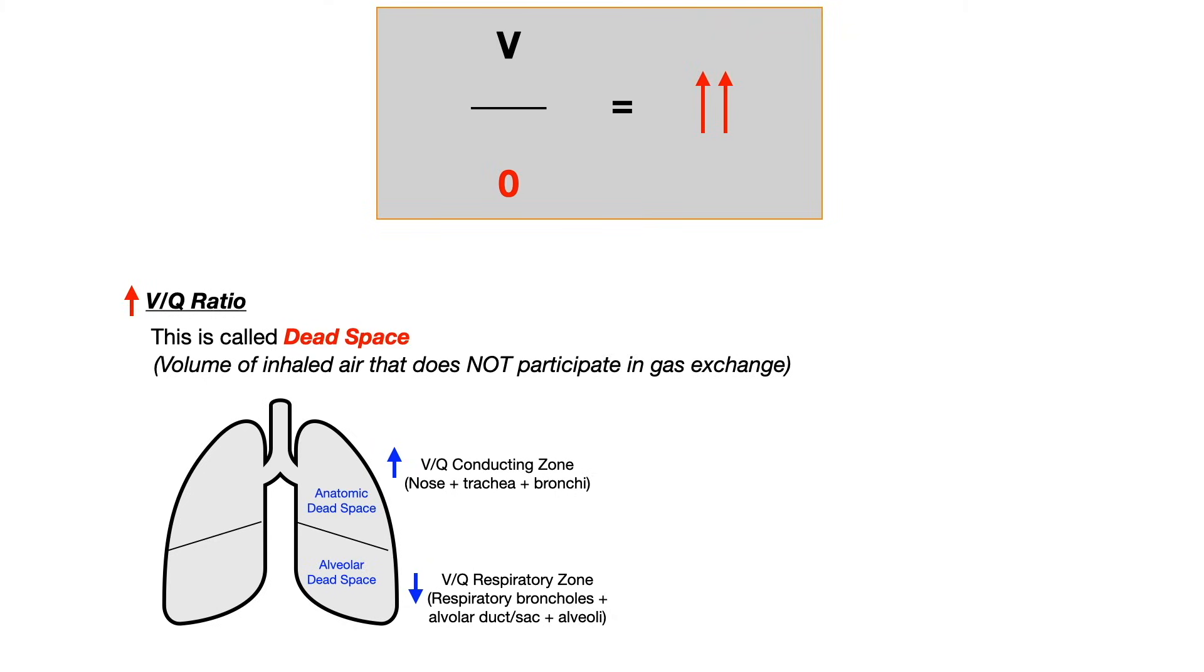And then the opposite is true in the alveolar dead space. That as you go down, because ventilation, relatively speaking, isn't as high as your percusion Q, as your blood flow, because again, gravity is going to pull that blood down to the base of the lungs. You have an alveolar dead space in the respiratory zone, which is your respiratory bronchioles, plus your alveolar duct, plus your alveolar sac, plus your alveoli.